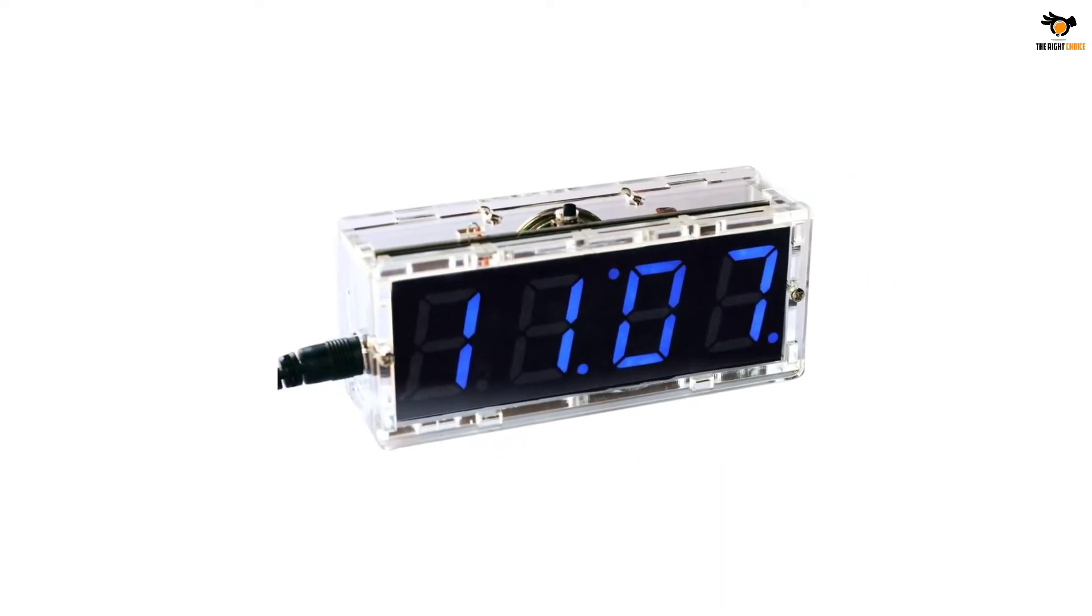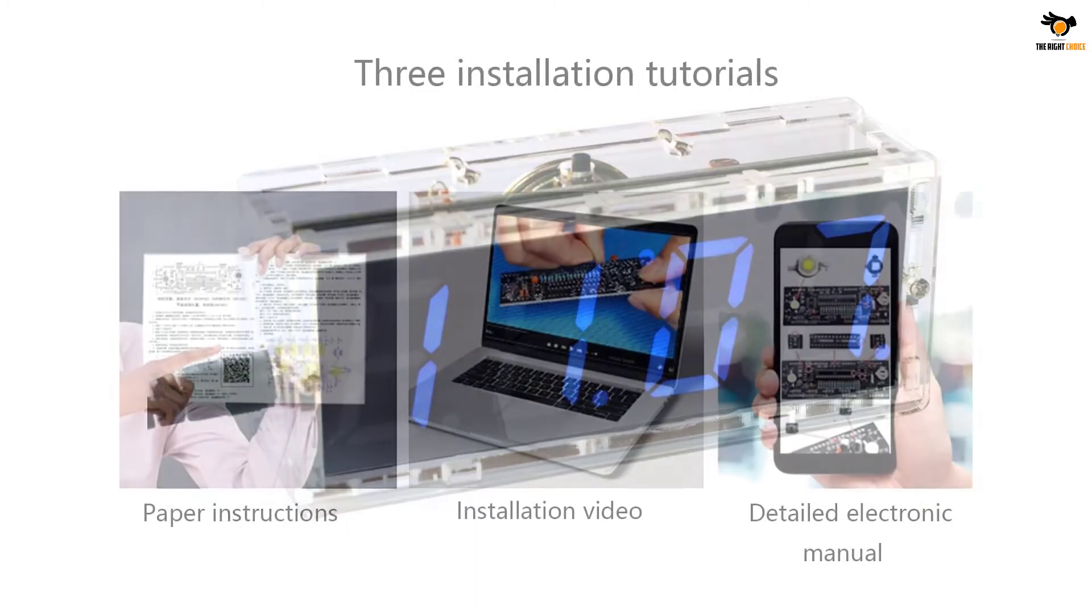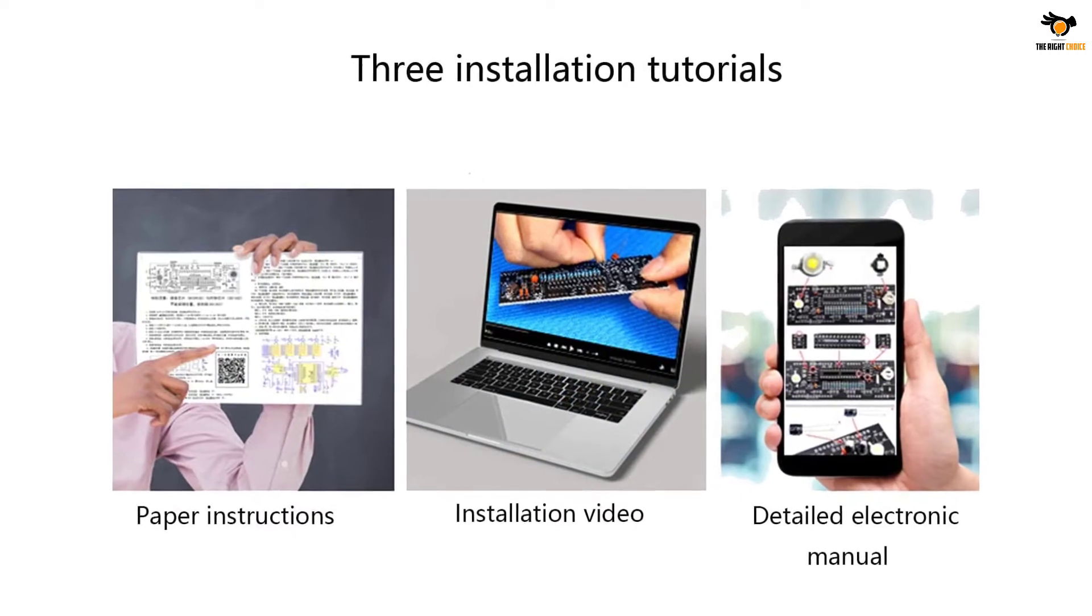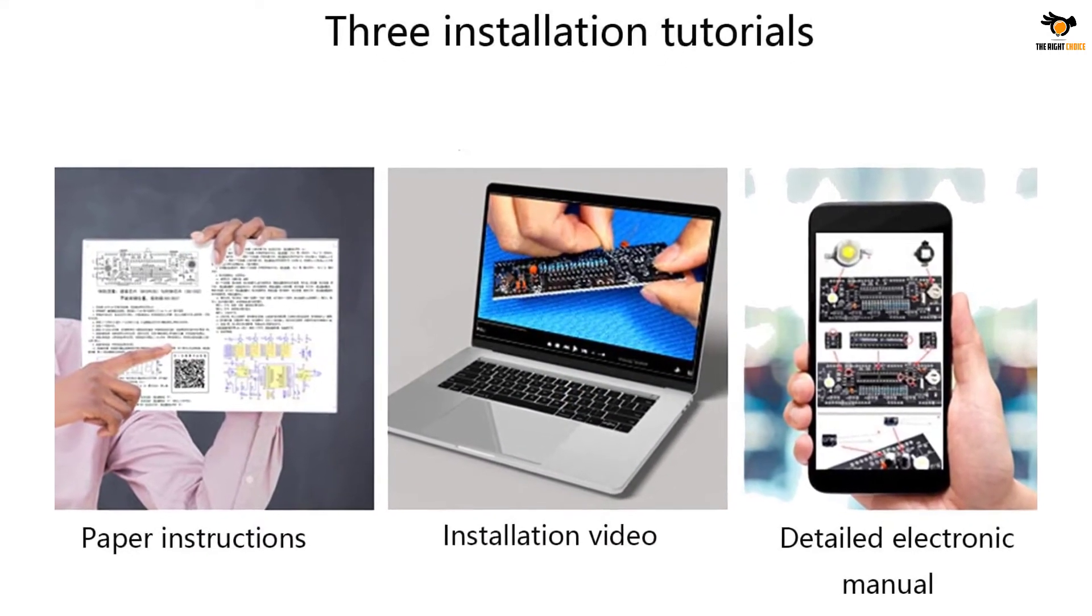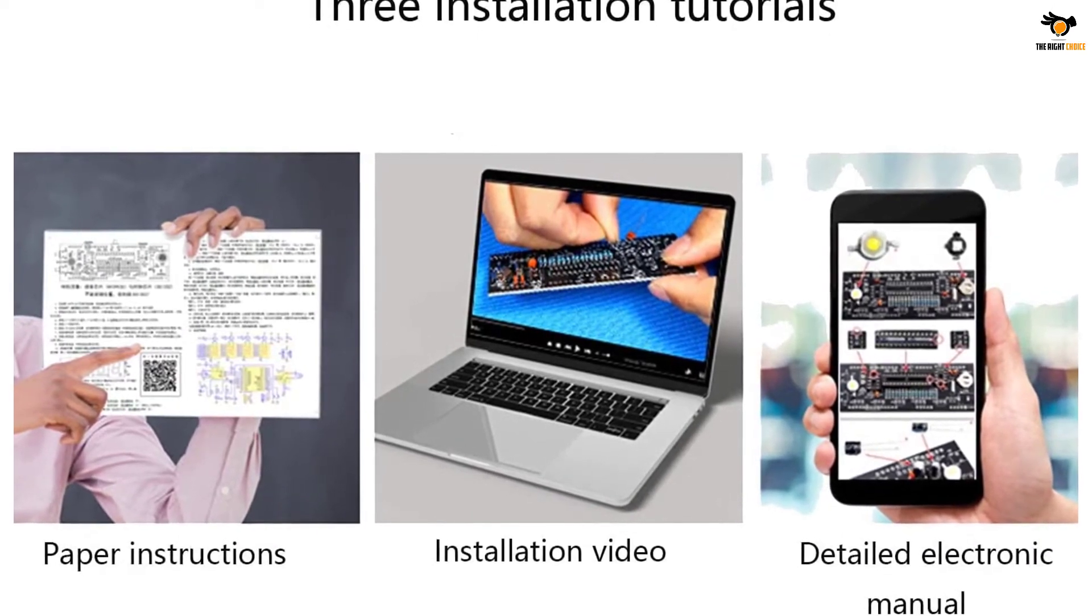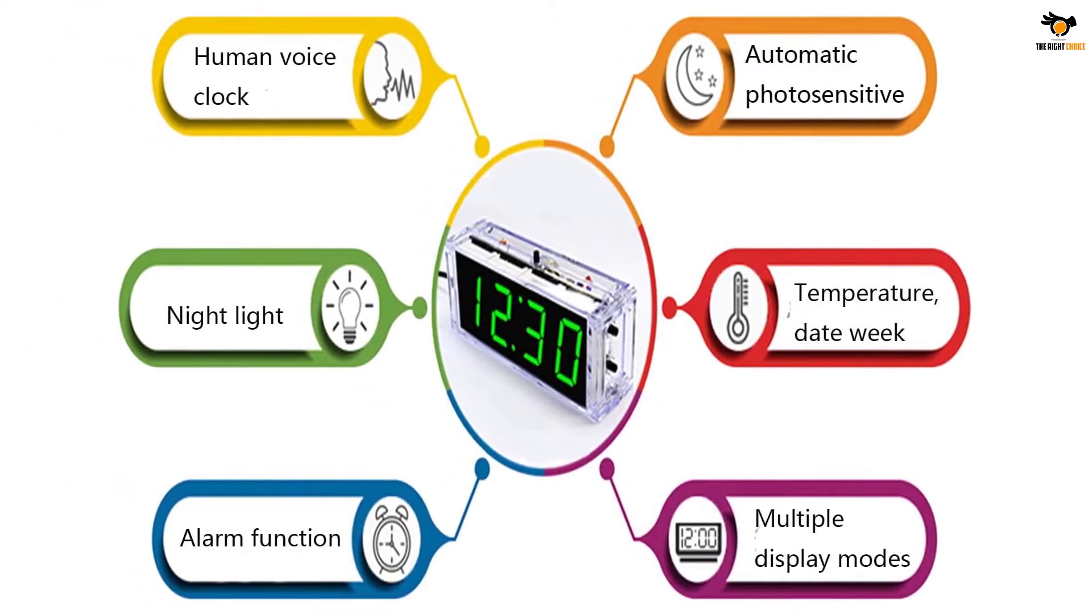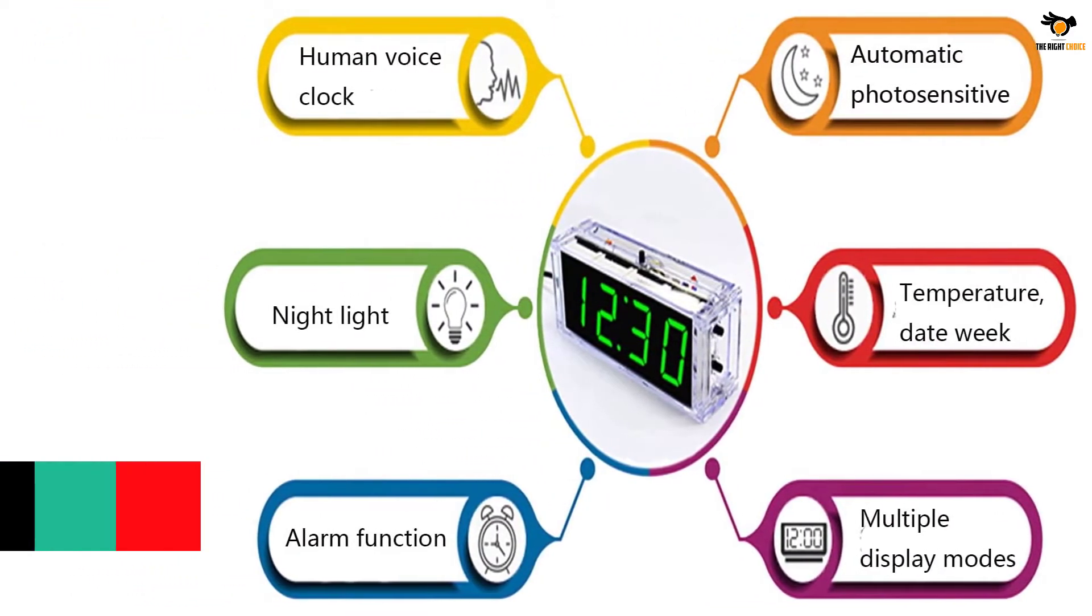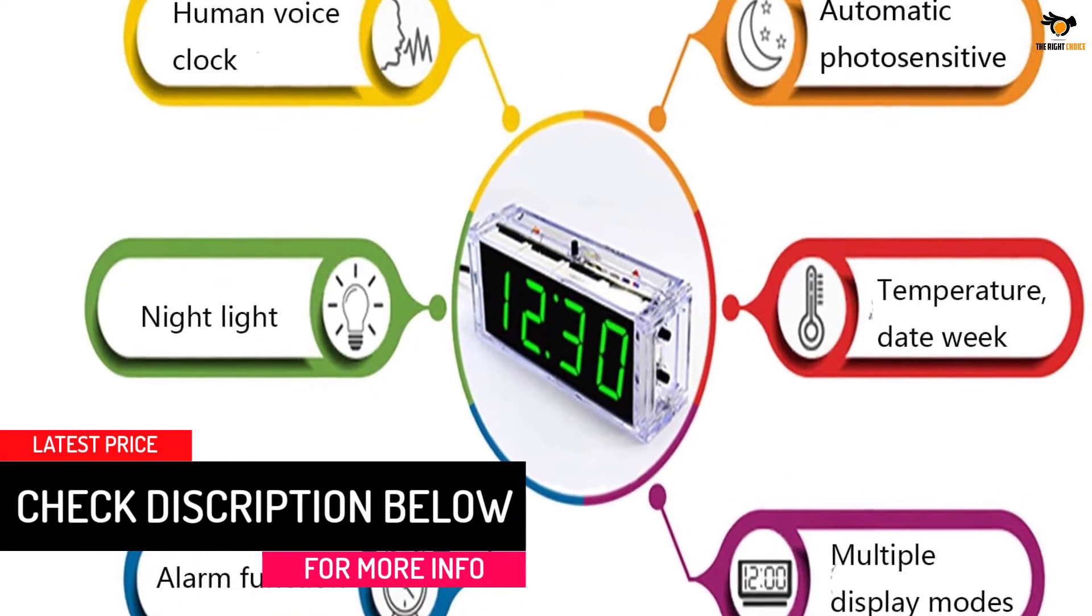It is convenient to supply power to the clock using its USB power cable. You can easily change the time display mode by pressing the button. With its convenient transparent case, components are protected and the finished clock looks stylish. Simply scan the QR code to get detailed instructions for easy installation. The only drawback is that batteries CR1220 and CR1216 are not included in the pack.